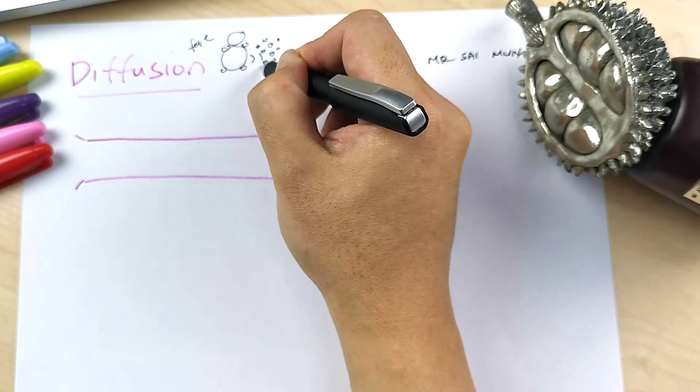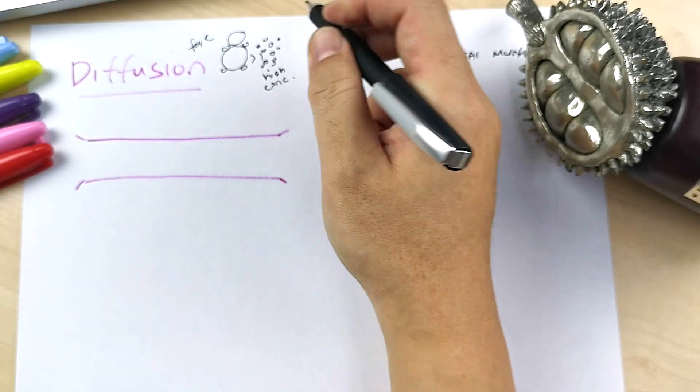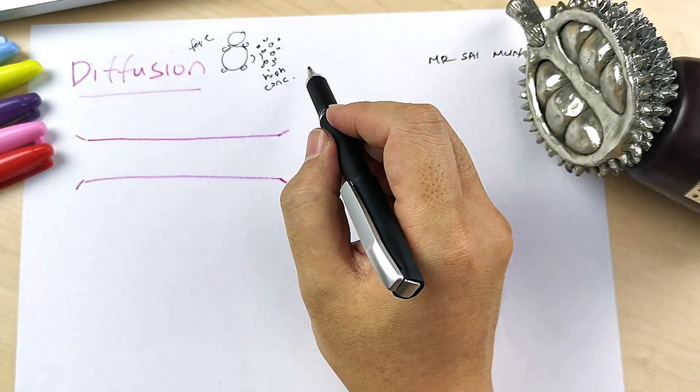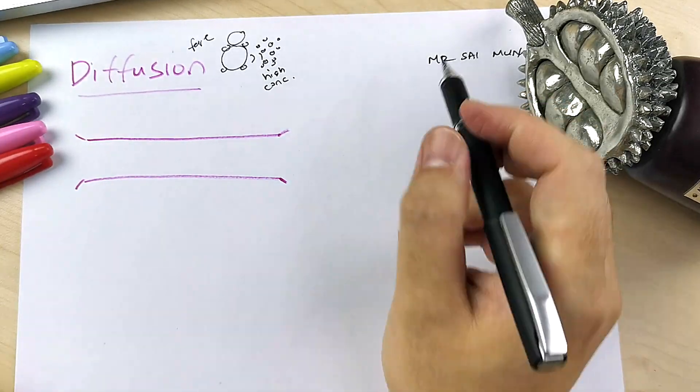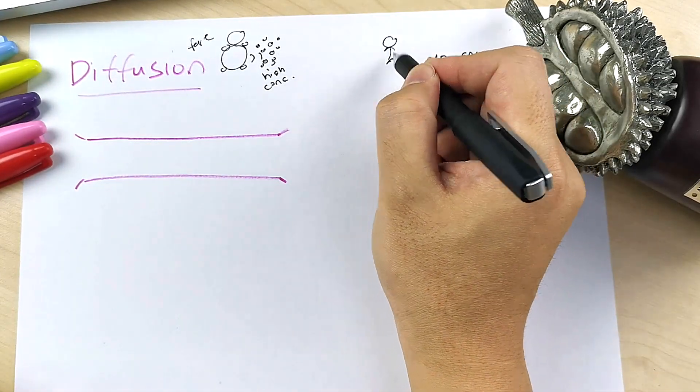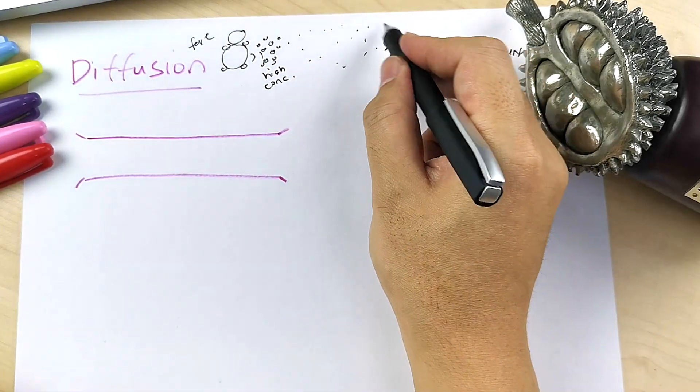This is a region of high concentration, so you slowly diffuse to another area with lower concentration. So let's say you are standing here, so you slowly diffuse, you slowly move towards you. So this area is low concentration.